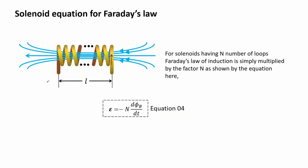For solenoids having N number of loops, Faraday's law of induction is simply multiplied by the factor N as shown in equation 4. An increase of induced EMF is proportional to the number of coils in the solenoid, which is useful in generating high amounts of electricity.